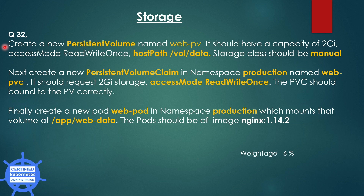The next question is: create a new persistent volume named WebPV. It should have a capacity of 2GB, access mode should be ReadWriteOnce, and host path is /vol/data. Storage class should be manual. After creating the PV, create a new persistent volume claim in the namespace production named WebPVC. It should request 2GB storage, and access mode should be ReadWriteOnce. The PVC should be bound to the PV correctly.